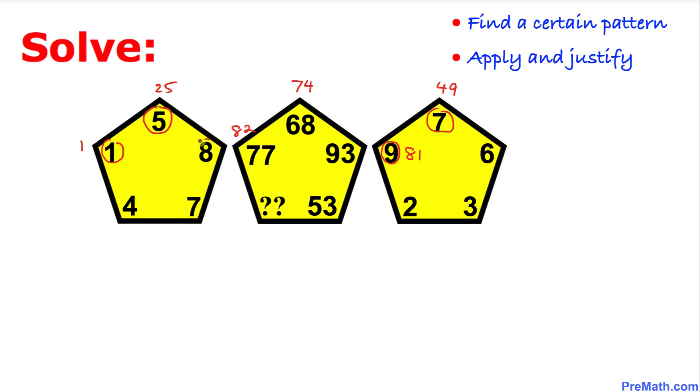Likewise when we square 8 that is going to give us 64, and square of this 6 is going to be 36. If we add 64 and 36 that is going to give us 100.